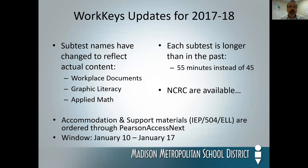Here are some specifics for WorkKeys. The subtest names have been changed. Workplace Documents used to be Reading for Information; Graphic Literacy used to be Locating Information; and Applied Math is still the same as Applied Mathematics. They've lengthened each of the subtests — it's now 45 minutes each, which is a half hour longer testing total for the three subtests. If you need the National Career Readiness Certificates, the NCRC, they are available — please let me know. The accommodation and support materials for students with IEPs, 504s, or ELLs are not ordered through the TAA like the ACT. They are ordered through the Pearson Access Next website, with a very short window of January 10th through January 17th.